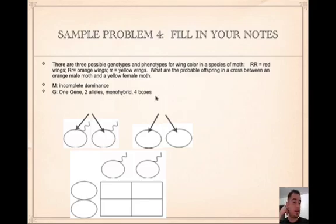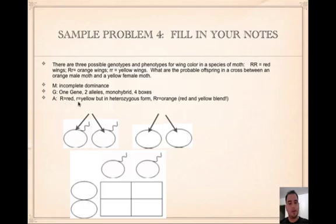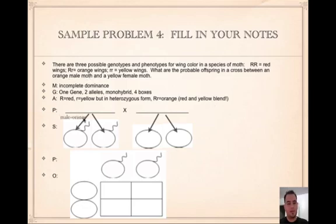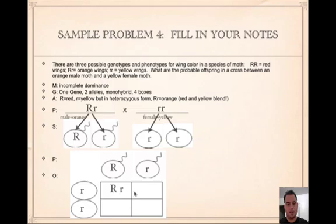There's still one gene — wing color only — so two alleles, monohybrid, four boxes. Big R is red and little r is yellow, but in the heterozygous form big R little r gives orange because red and yellow blend. The male is orange so he's big R little r, and the female is yellow so she's little r little r. Segregate the sex cells and set up the Punnett square. Fertilizing down and across gives 50% orange and 50% yellow offspring.